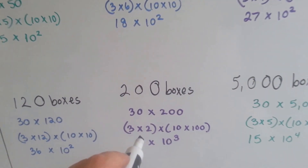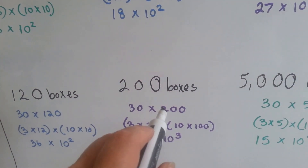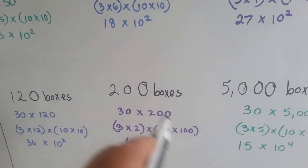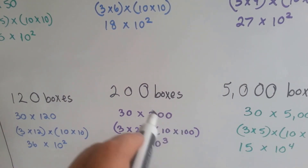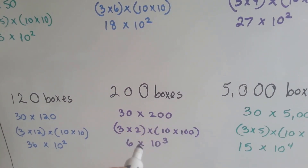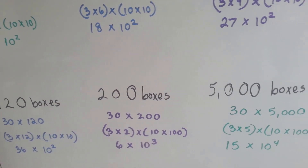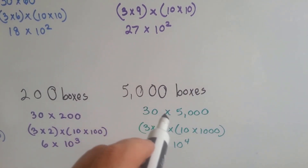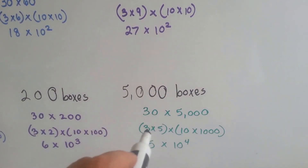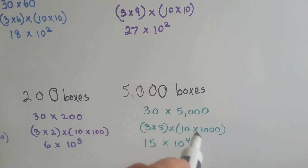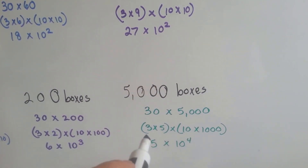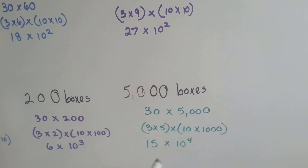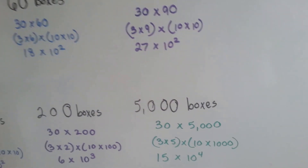We could do it with 200 boxes. We group the 3 and the 2 together, and instead of 10 times 10 like the others, we'd have 10 times 100 — because 2 times 100 is 200. That gives us 6 times 10 to the third power: a 6 with 3 zeros. For 5,000 boxes, 3 goes with the 5, and the 10 and the 1,000 go together, giving us 15 times 10 to the fourth power, or 150,000.